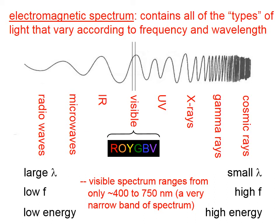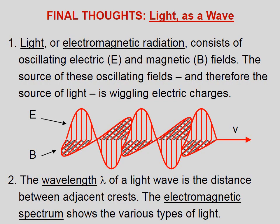The visible spectrum, we said it's a very narrow band, a very tiny portion of the overall spectrum. Final thoughts on light as a wave. One, light, or electromagnetic radiation, consists of oscillating electric and magnetic fields. The source of these oscillating fields, and therefore the source of light, is wiggling electric charges. Two, the wavelength, lambda, of a light wave, is the distance between adjacent crests. The electromagnetic spectrum shows the various types of light.